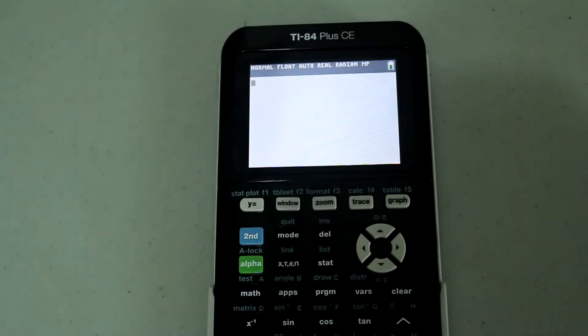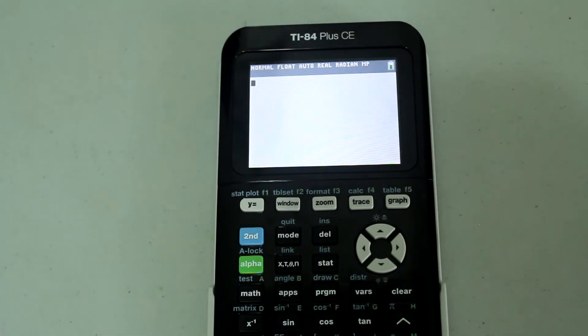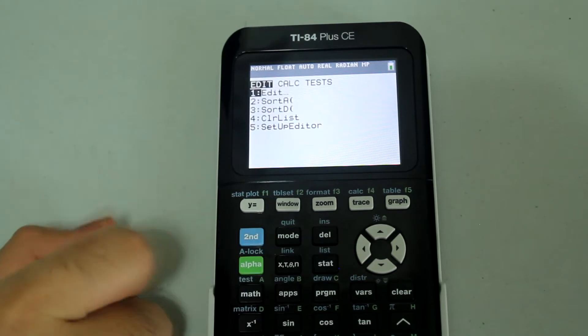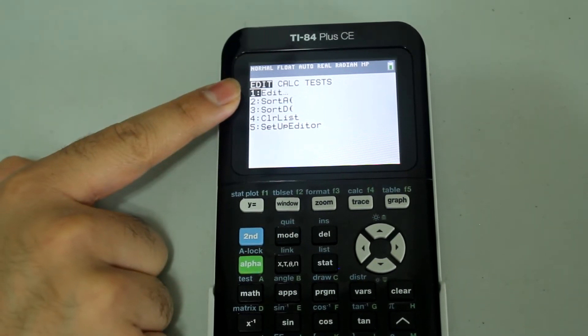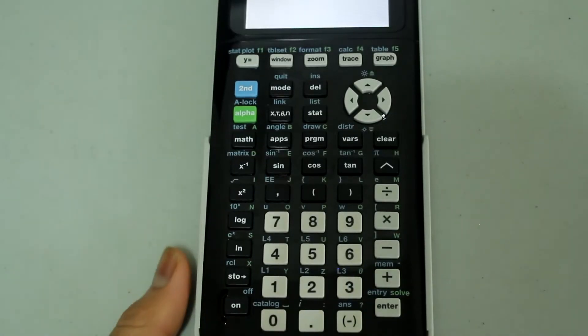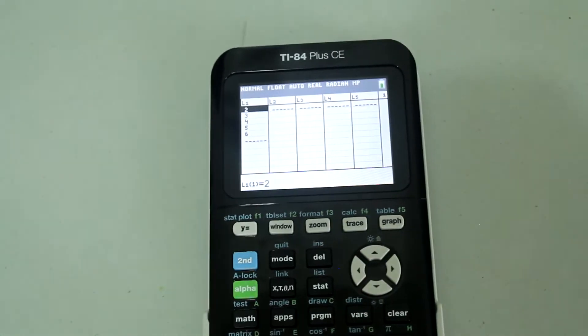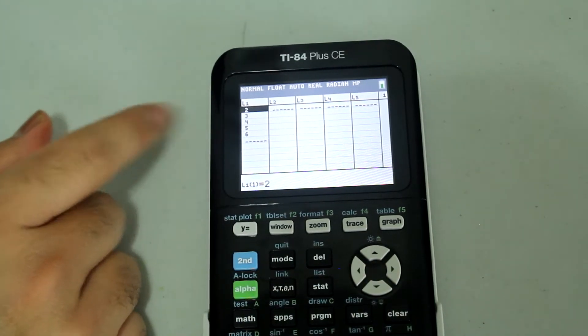In order to enter this data into the calculator, press the stat button and this screen comes up. Select edit by simply pressing enter, and then these lists come up labeled L1, L2, and so on.